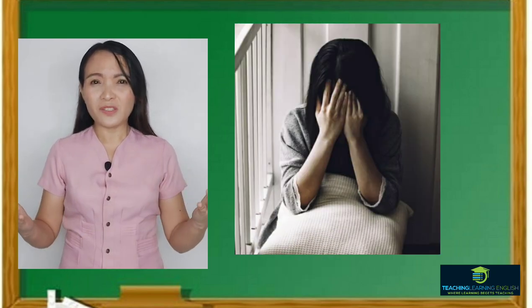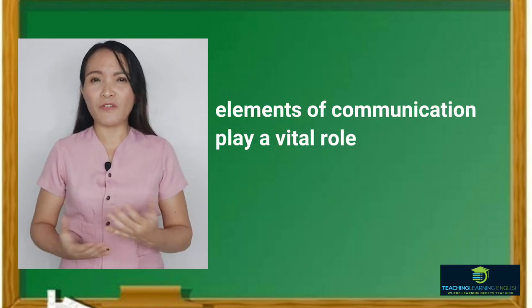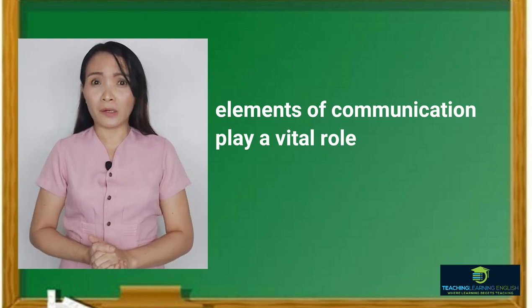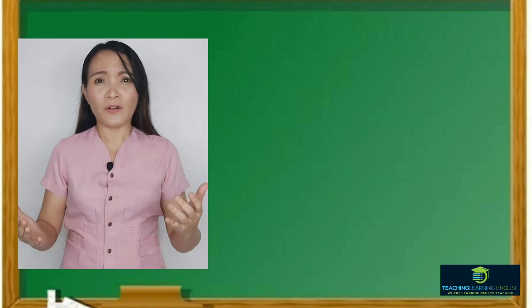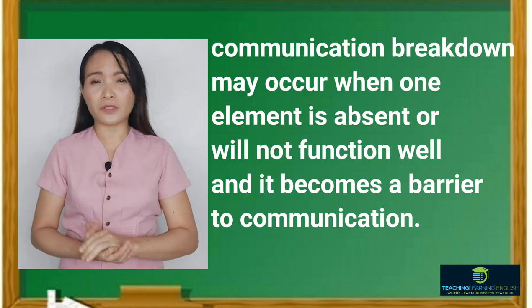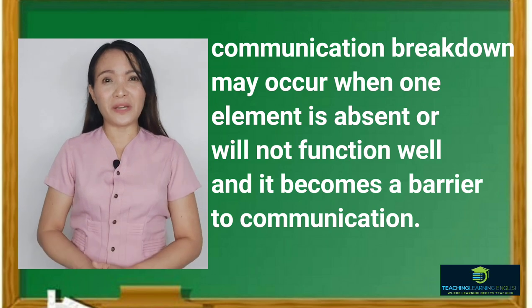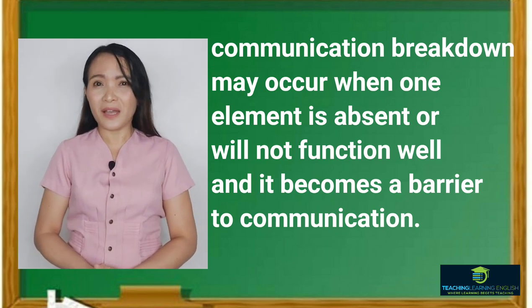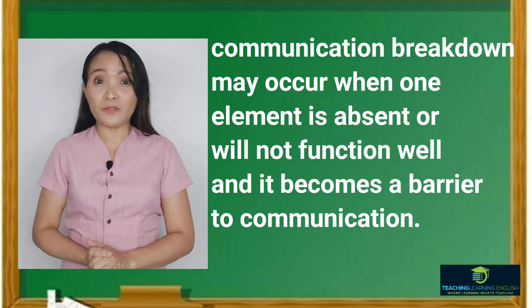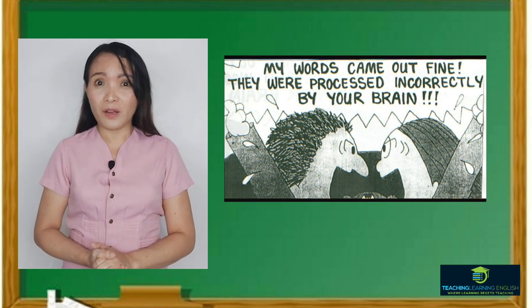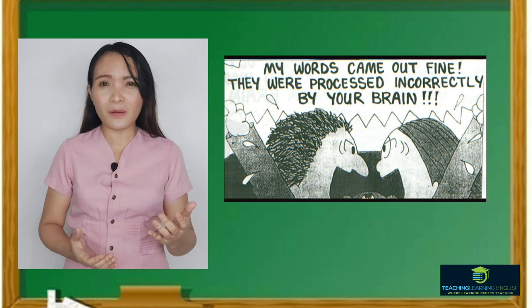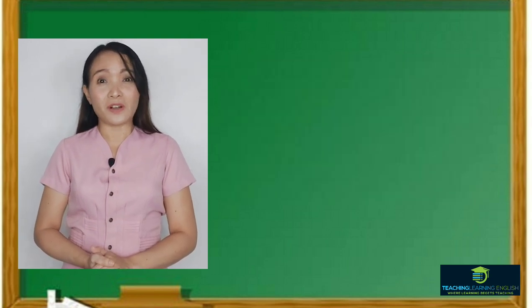What can you say about the picture? It seems that she is heartbroken. What's the usual reason for breaking up a relationship? There are many factors — these are the barriers. Just like in the communication process, the elements of communication play a vital role. Communication breakdown may occur when one element is absent or does not function well, and it becomes a barrier. In other words, communication breakdown results when the intended message of the sender is not understood by the receiver. Barriers to communication can cause roadblocks in a person's professional or personal life.